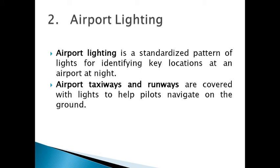The definition of airport lighting is: it is a standardized pattern of lights for identifying the key locations of the airport at night. It is not only the runway — it includes the taxiway, the hangar, and the terminal building. All these are lighted so that a pilot approaching from a distance can identify the locations of the control tower, hangar, and taxiway.